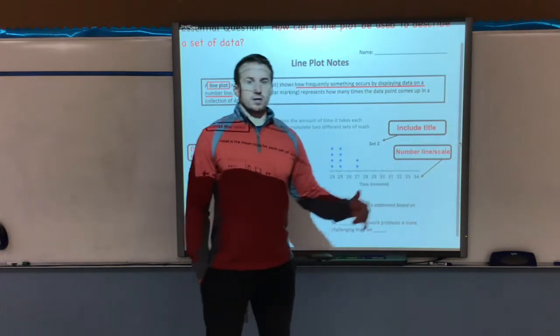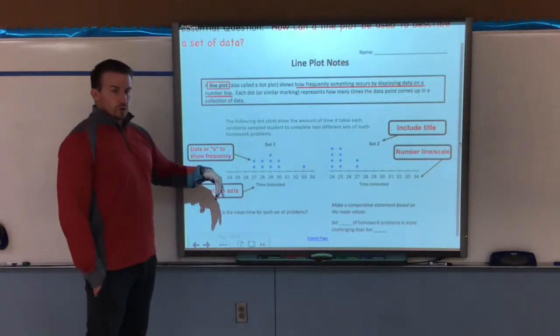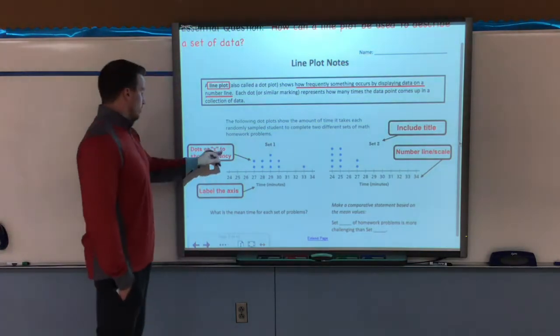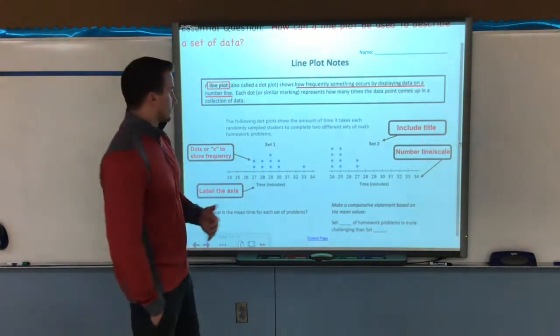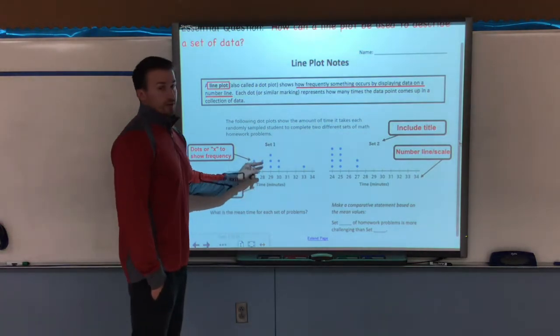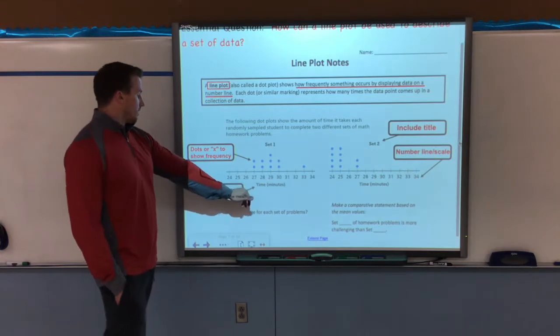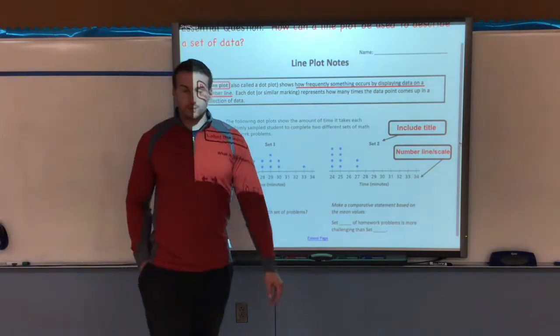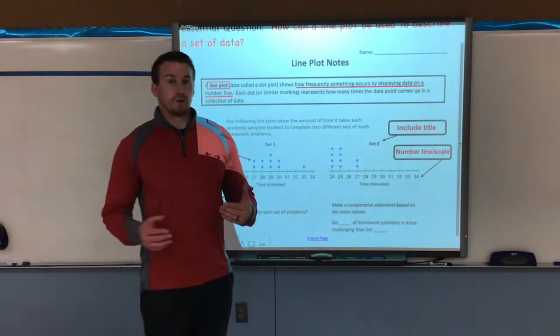You have a number line or your scale. Then you have dots or x's that show the frequency of that number for that set of data. So for example, there are two 27s, two 28s. And then finally you label the axis down at the bottom under the number line, so that way you know what the number line is actually representing. So in set one, it's time in minutes, set two is also time in minutes.